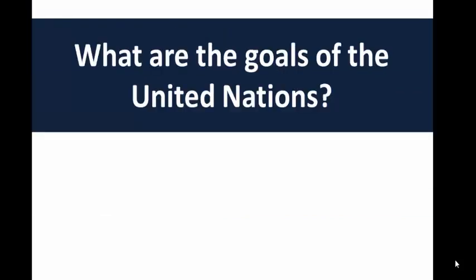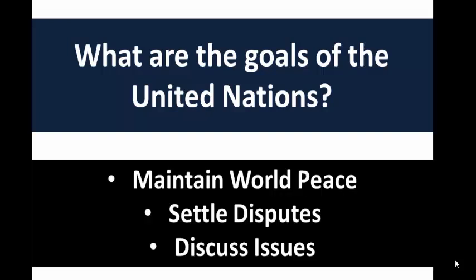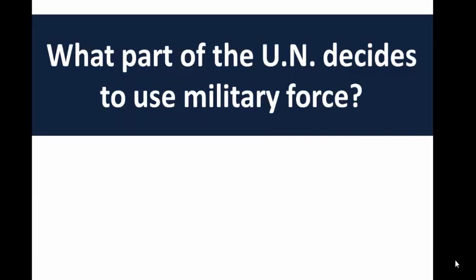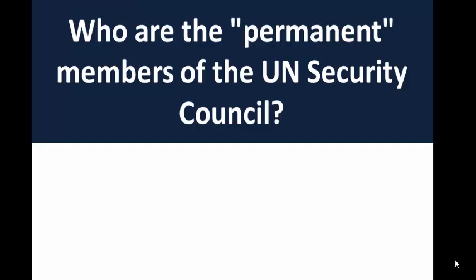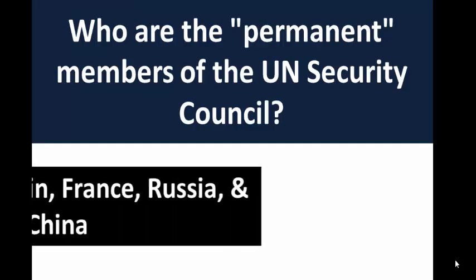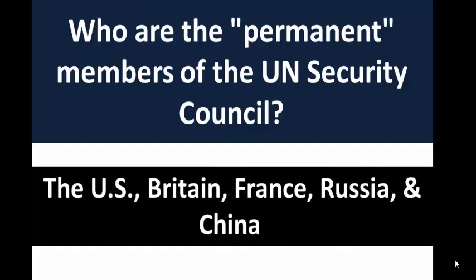Let's review. What are the goals of the United Nations? The goals are to maintain world peace, settle disputes, discuss issues, and help people around the world. What part of the UN decides to use military force? That is the UN Security Council — remember there are five permanent members. Who are the permanent members of the UN Security Council? The US, Britain, France, Russia, and China.